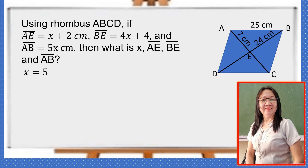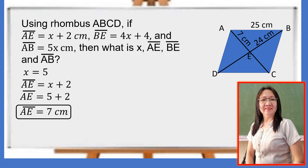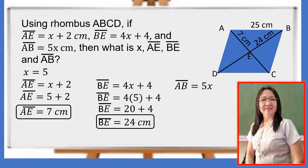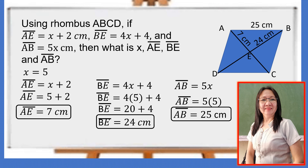With X equals 5: AE equals X plus 2, so AE equals 5 plus 2, which is 7 centimeters. For BE equals 4X plus 4, substituting gives 4 times 5 is 20 plus 4, so BE equals 24 centimeters. For AB equals 5X, 5 times 5 is 25, so AB equals 25 centimeters.